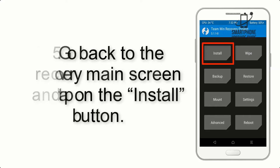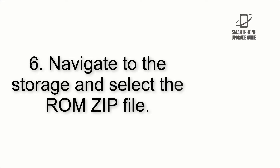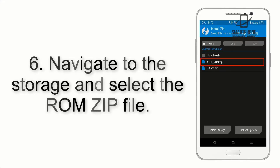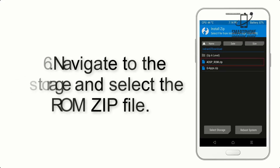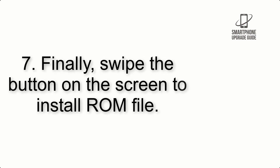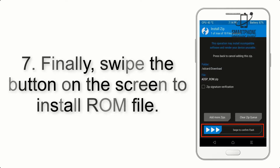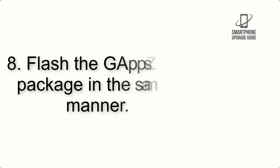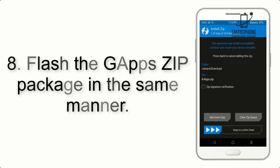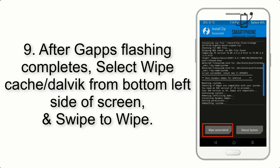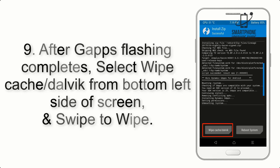Step 5: Go back to the recovery main screen and tap on the Install button. Step 6: Navigate to the storage and select the ROM zip file. Step 7: Swipe the button on the screen to install the ROM file. Step 8: Flash the GApps zip package in the same manner.